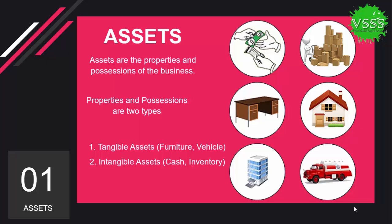First, I have described what is meant by assets. Assets are the properties and possessions of any business. Assets and properties are of two different types: one is tangible assets and the second is intangible assets. Tangible assets include furniture, vehicles, land, and buildings. On the other hand, intangible assets include goodwill and patents.